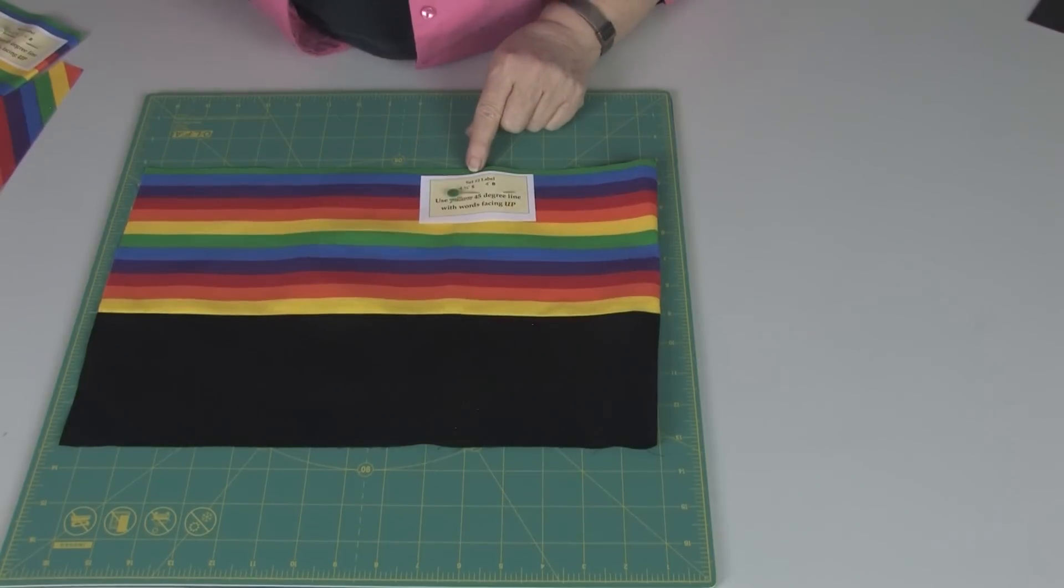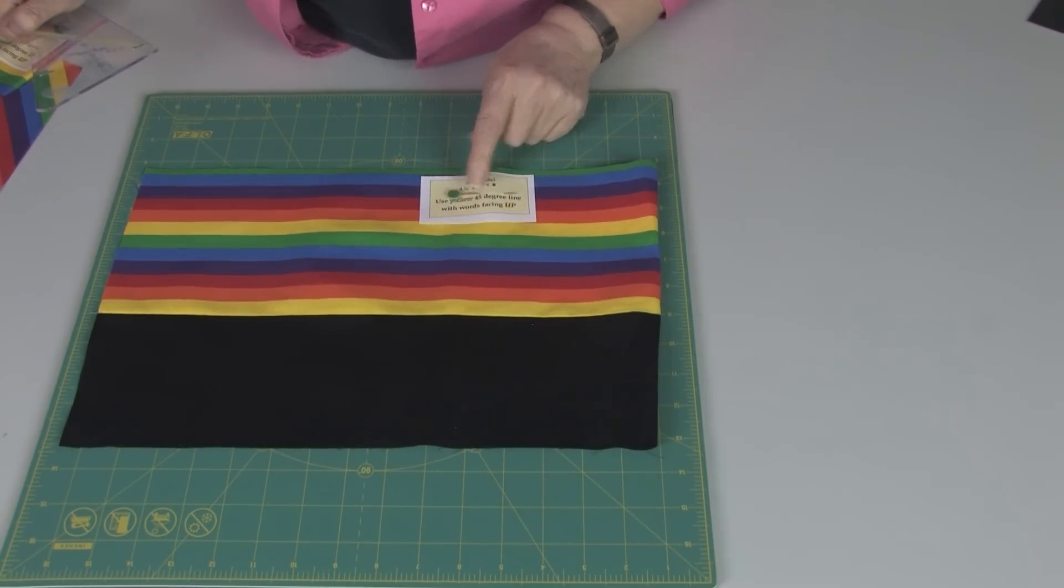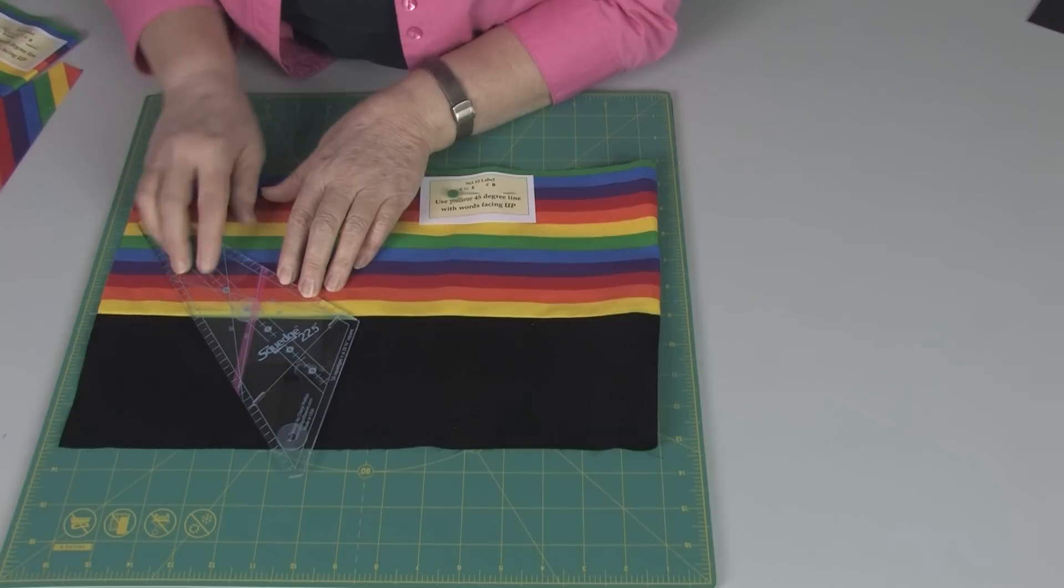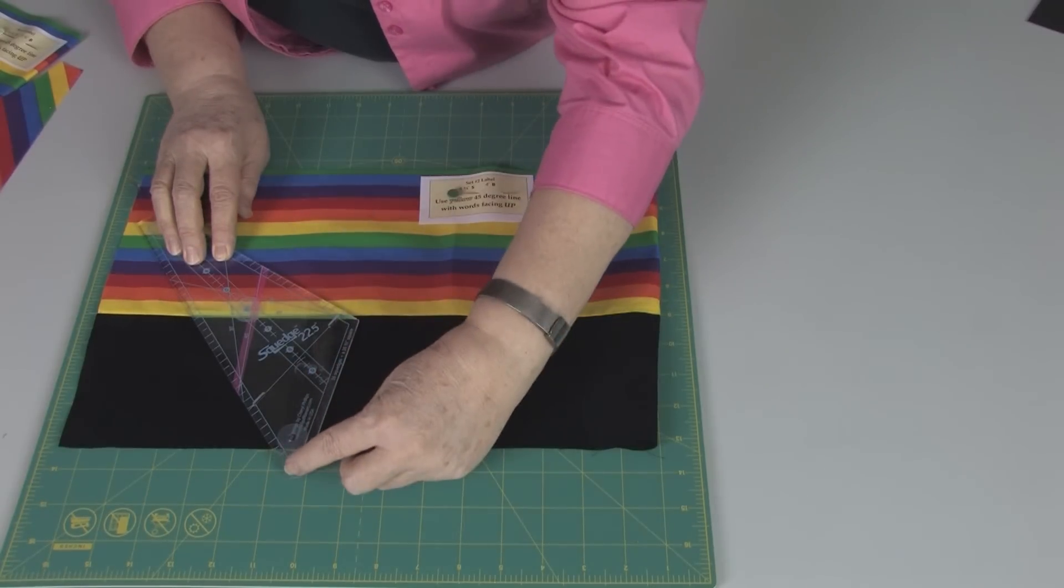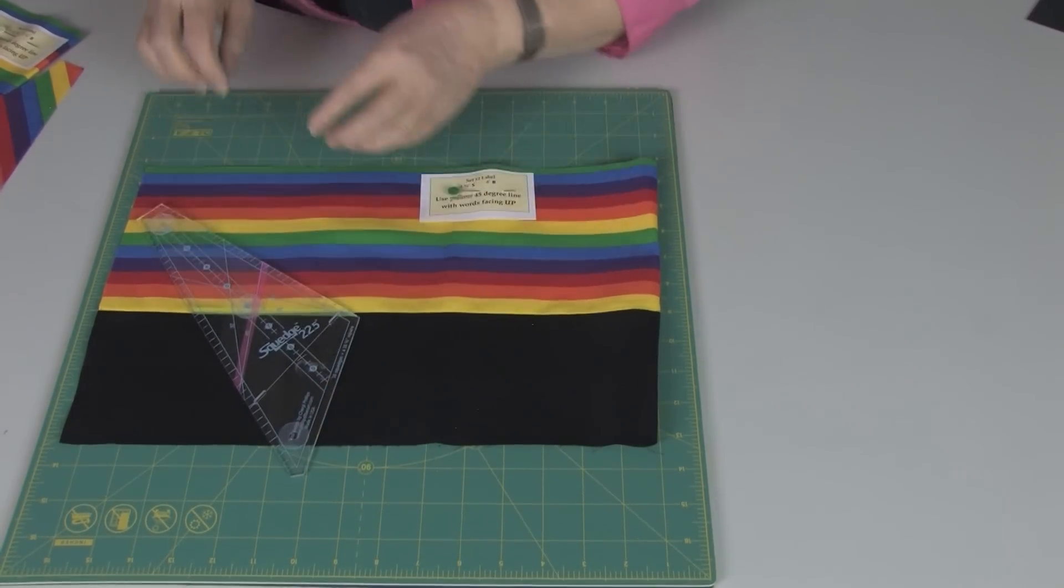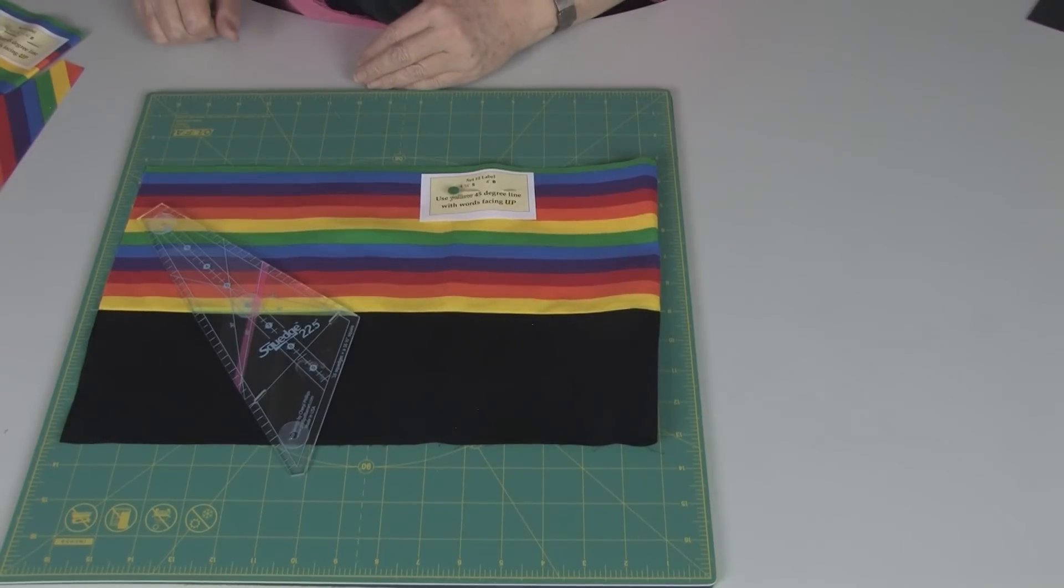Next, I go to strip set two. I read my label. It says the yellow 45-degree and facing up. So I place this on here like this. You'll notice that my tool extends beyond the black. That's okay because this is one of the shorter pieces.